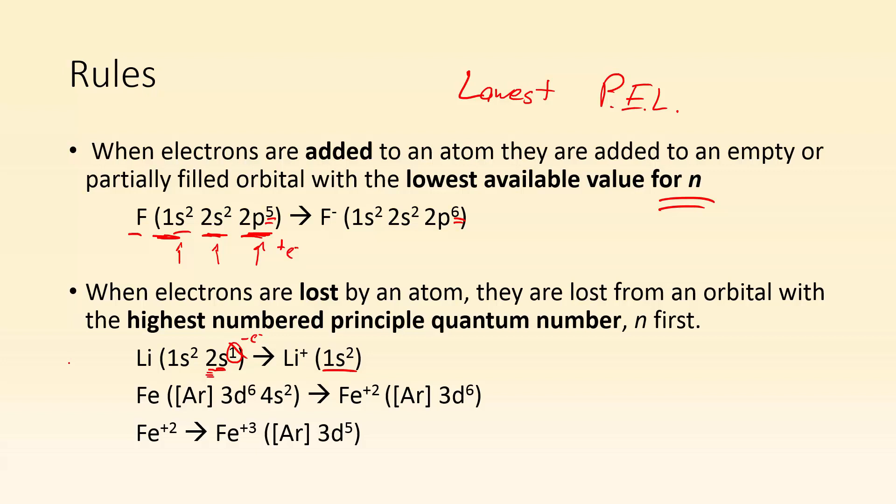So now if I take a look at iron with its electron configuration as [Ar] 3d6 4s2, if I were to lose two electrons, where am I going to lose them from? I'm going to lose them from the one with the highest possible quantum number. So the 4, the 4s2. I'm going to lose those two electrons. They've gone the way of the dodo. They're gone now.